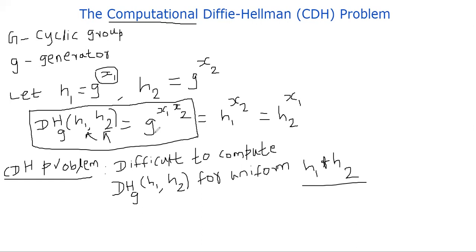It could be possible that there is a way to compute g power x1 x2 without even computing x1 or x2. Let me say it this way. There is no equivalence between the hardness of the discrete log problem and computing the DH computational Diffie-Hellman problem. Meaning it may be the case that the discrete logarithm problem remains hard, yet it is possible to compute DH of h1, h2. That's an interesting point to make here.